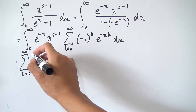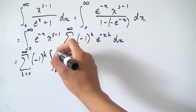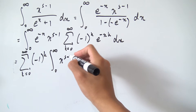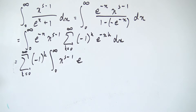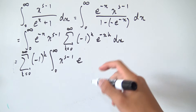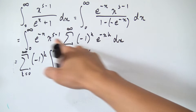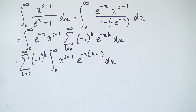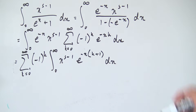Now we can distribute the exponent into the product of negative 1 and e to the minus x, giving us negative 1 to the k times e to the minus x times k. Since we know this sum converges, we can pull the sum to the outside — interchanging limits won't be a problem. So we have the sum from k equals 0 to infinity of negative 1 to the k, times the integral from 0 to infinity of x to the s minus 1.